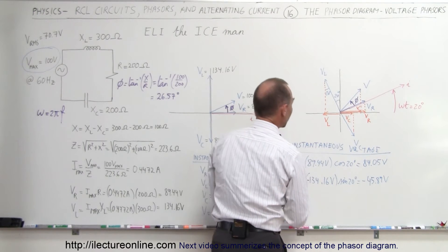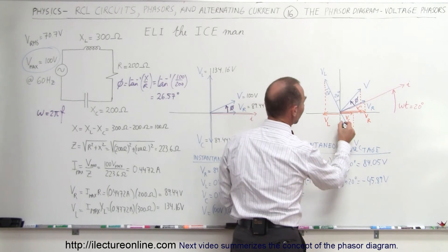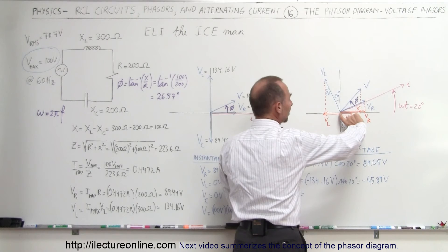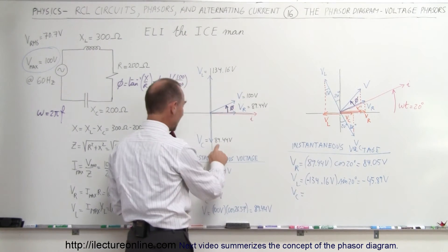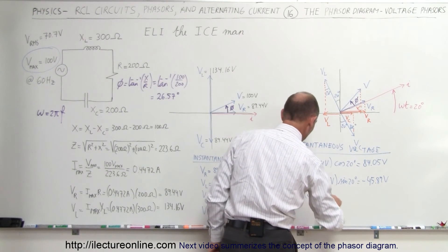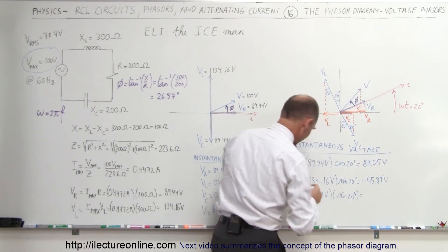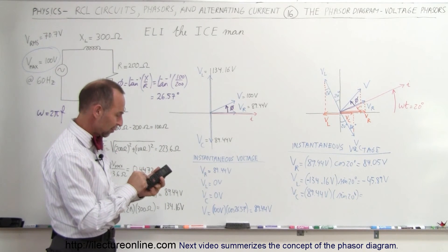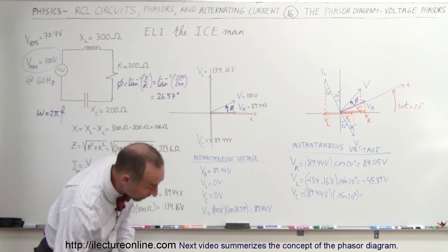How about the voltage across the capacitor? That's going to be this projected onto the horizontal axis. Again, this here is a 20 degree angle, so we need to take the maximum value of the hypotenuse times the sine of the angle to get this value. That would be 89.44 volts multiplied times the sine of 20 degrees. The voltage across the capacitor is going to be positive: 89.44 times sine of 20 degrees equals 30.59 volts.